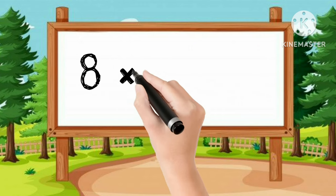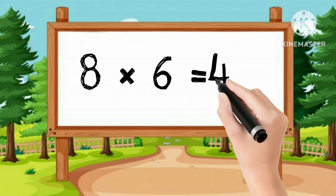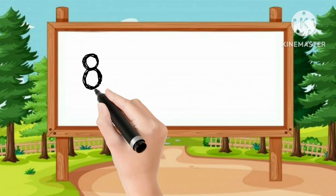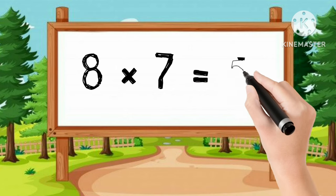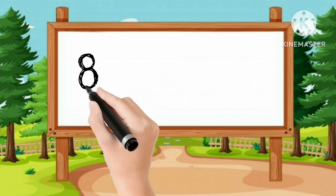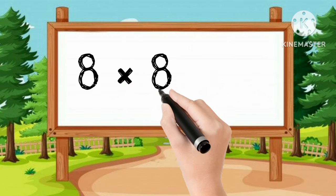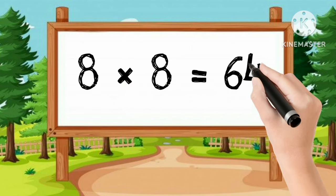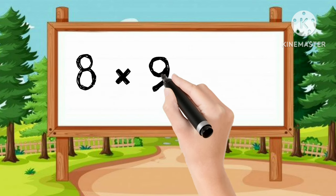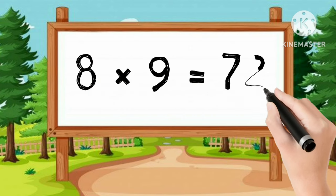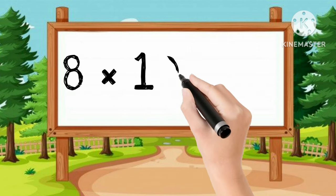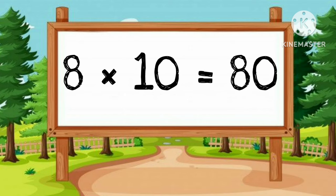8-6s are 48. 8-5s are 56. 8-8s are 64. 8-9s are 72. 8-10s are 80.